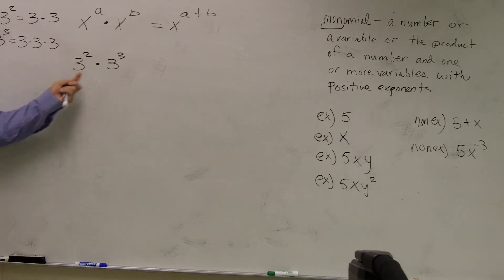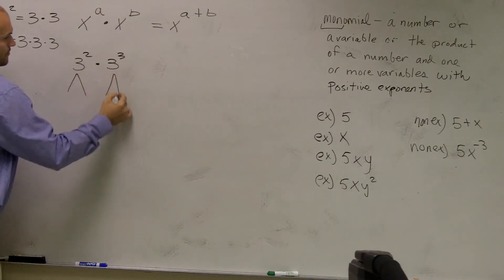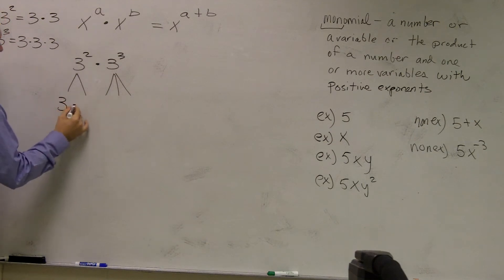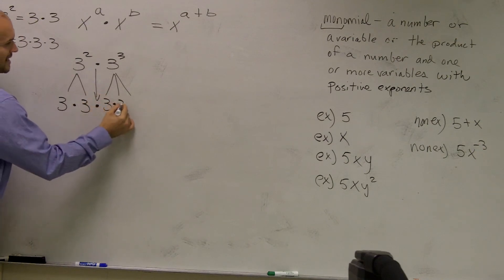So instead of writing it like this, what if I just wrote it as: this is 3 times 3, and this means multiply, right? 3 times 3 times 3. Does that make sense what I did?